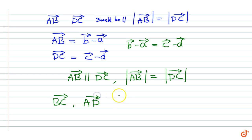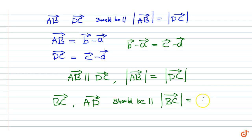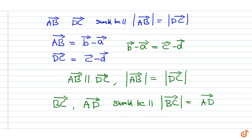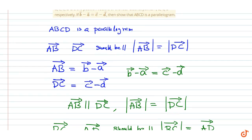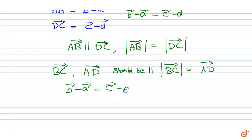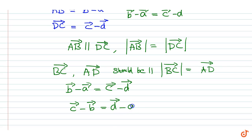Vector BC and vector AD should be parallel, and the magnitude of vector BC should be equal to the magnitude of vector AD. From the given equation, vector b minus vector a equals vector c minus vector d. We can rewrite this as vector c minus vector b equals vector d minus vector a.